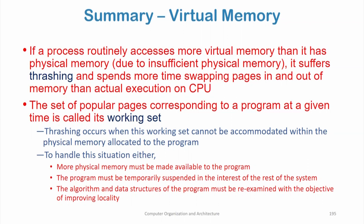To handle thrashing, we can allocate more physical memory to the process. If that is not possible, the program must be temporarily suspended in the interest of the rest of the system. The page frames allocated to this process can then be distributed among other processes. When the situation improves and disk access is lowered, this process can again be brought back and executed.